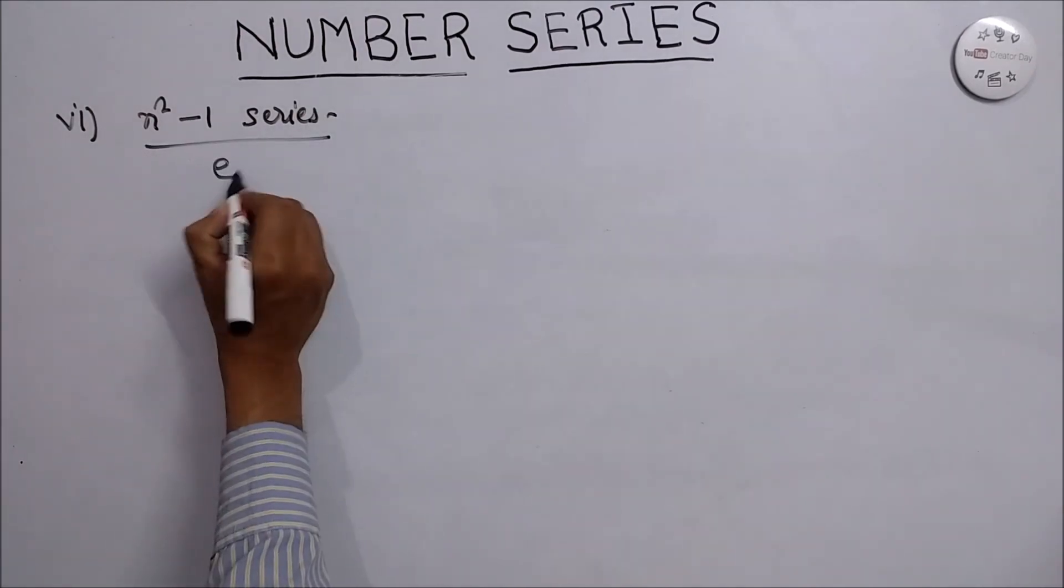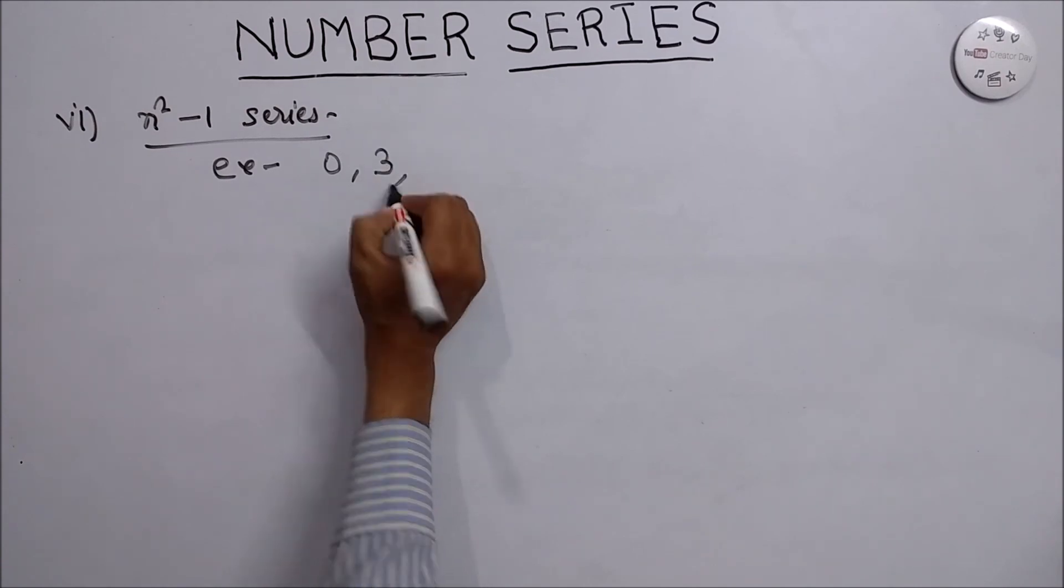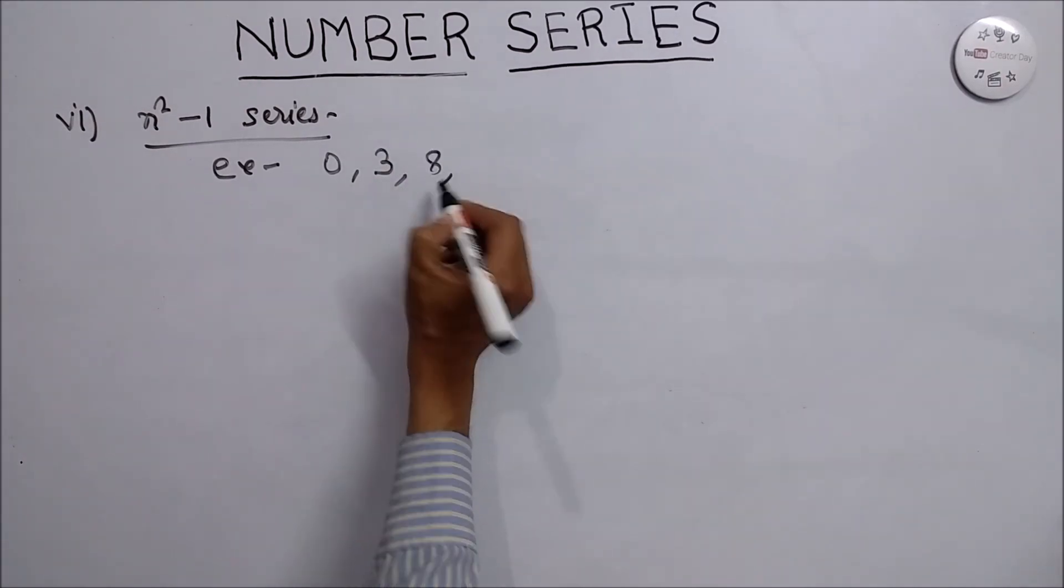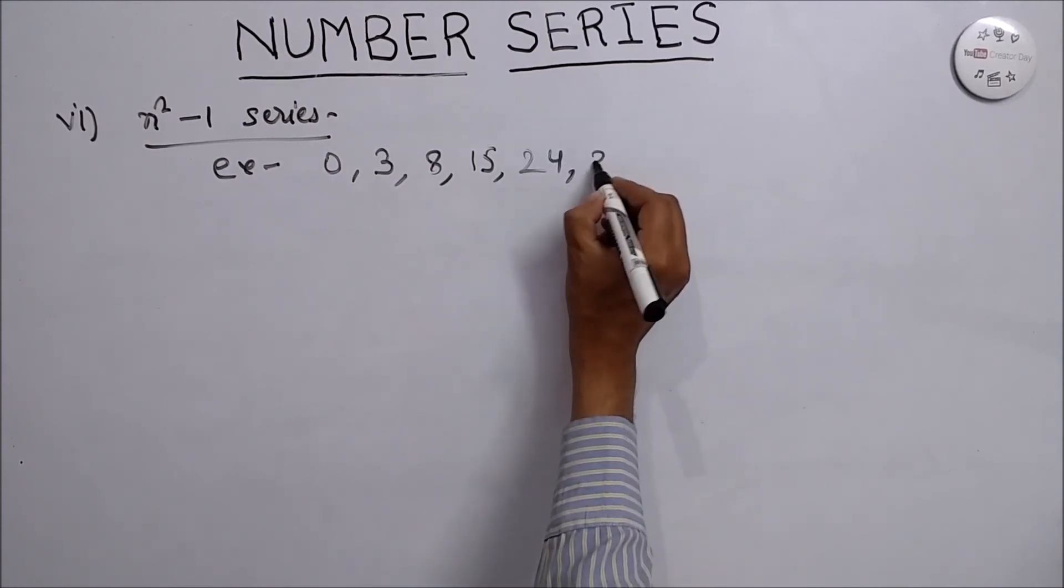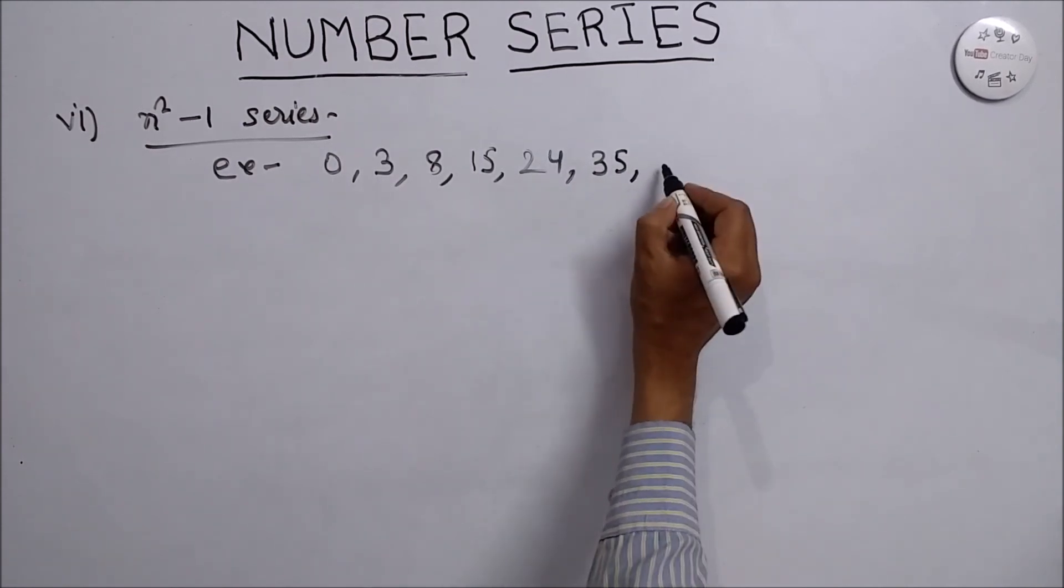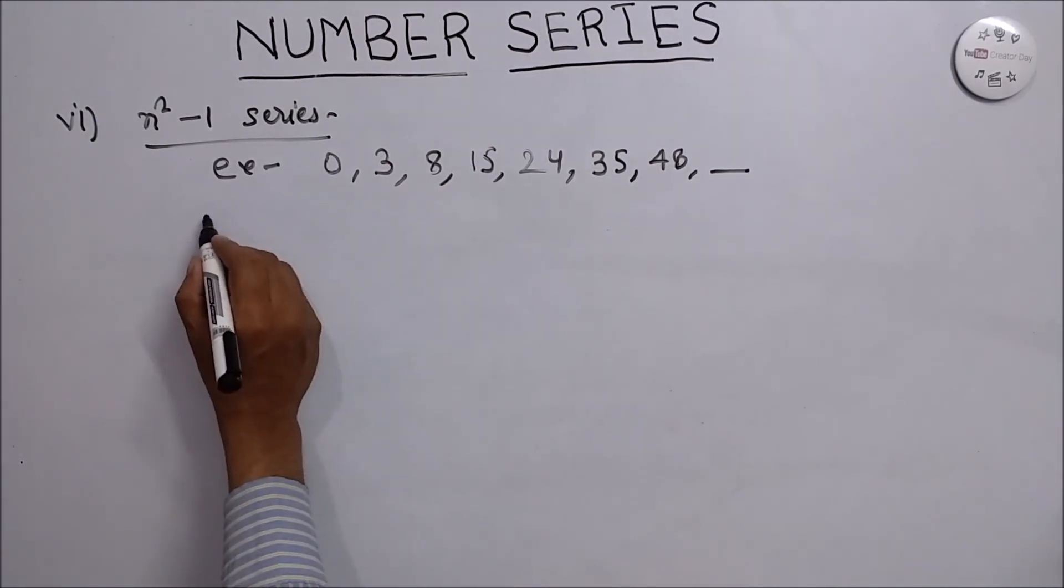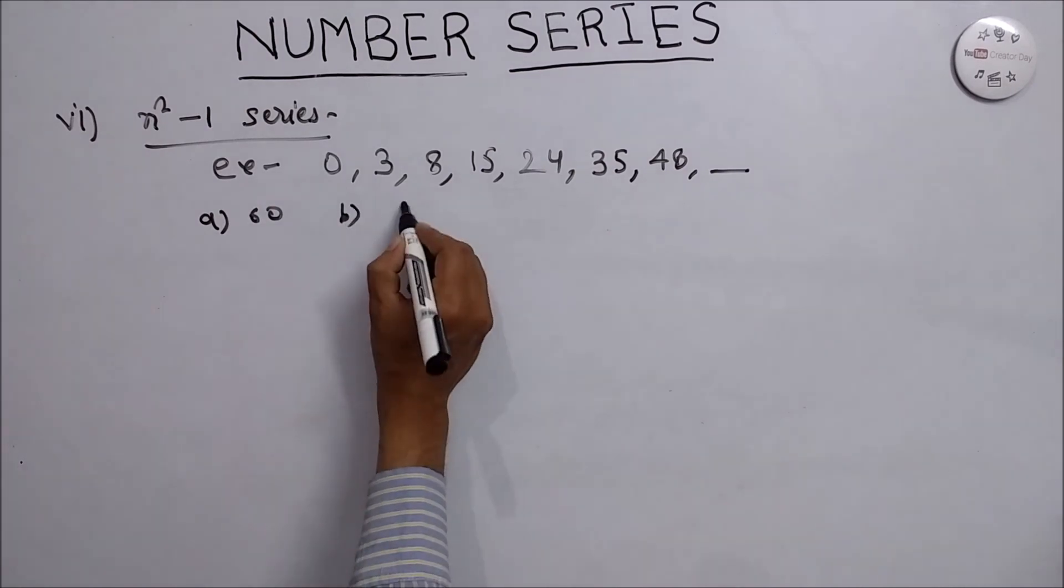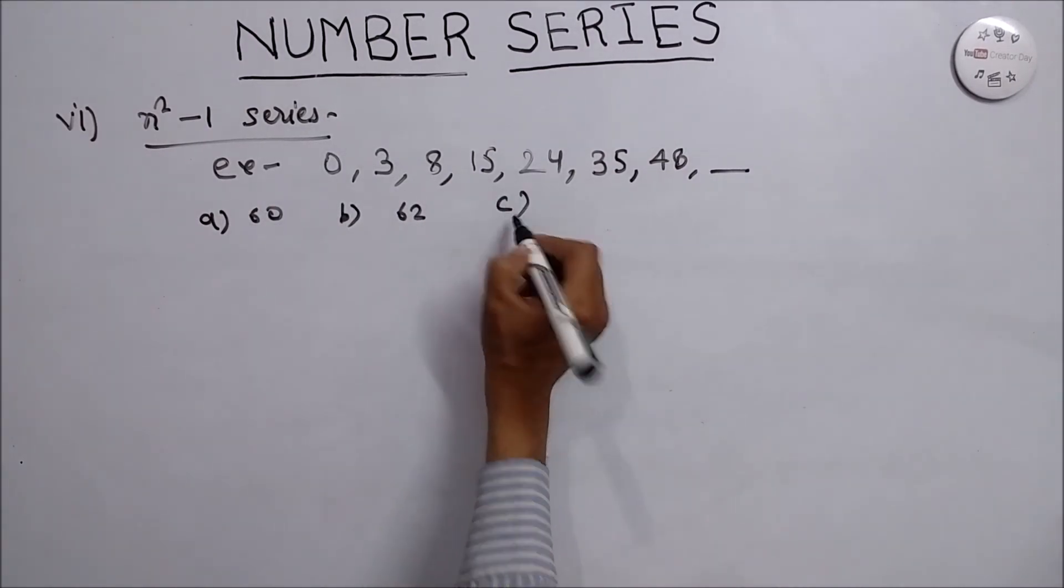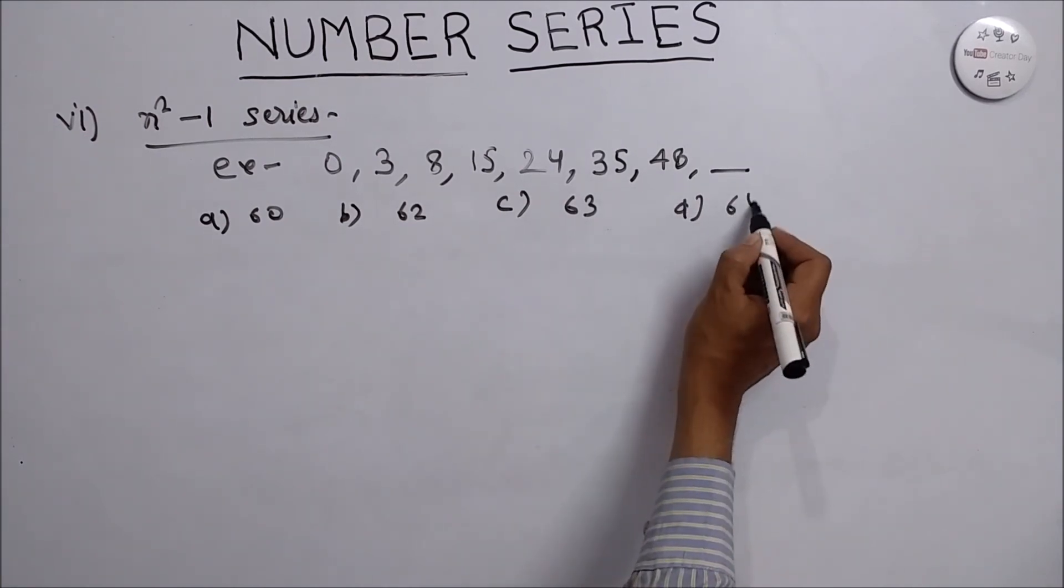We take example: 0, 3, 8, 15, 24, 35, and 48. Options are A is 60, B is 62, C is 63, D is 64.